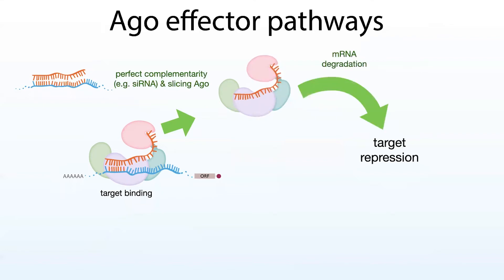Ago has to be slicing competent. Humans have four Ago proteins, Ago1 through 4. Our main Ago protein, Ago2, does have slicing ability. The other human Agos do not, although Ago3 can slice — there are results coming out that it can slice certain targets when loaded with short microRNAs, but the extent of this usage is not really known. But Ago2 is our main Ago protein and it does have this slicing ability.